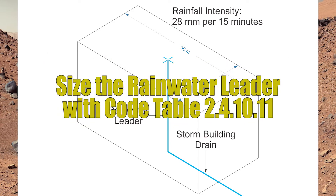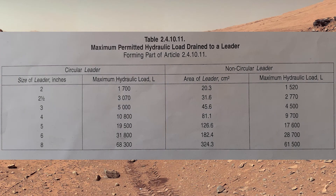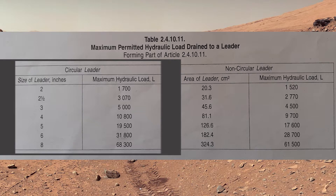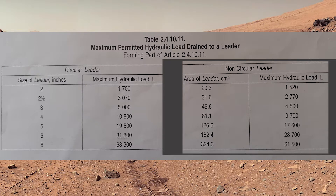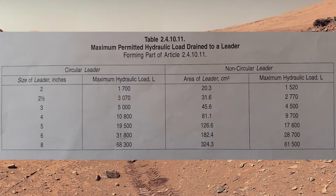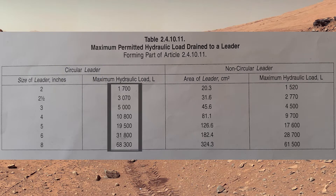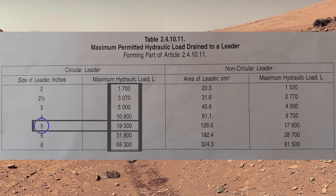First, let's size the rainwater leader. We need to look at table 2-4-10-11 to do this. You'll notice there are two halves: the left half is circular liters, and the right half is non-circular liters. For these examples we will always use circular liters. Under circular, we look down the right column for the maximum hydraulic load in liters. Going down the list we have a choice of 10,800 or 19,500. We're at 12,600, so we need to go to 19,500 — going across to the left, we find out we need a 5-inch rainwater leader.